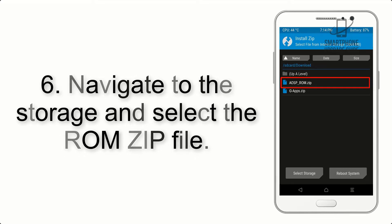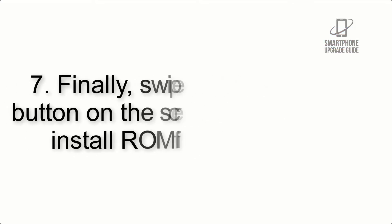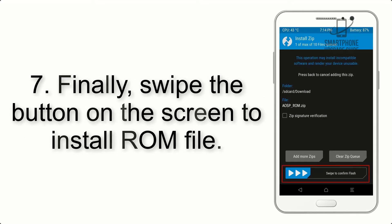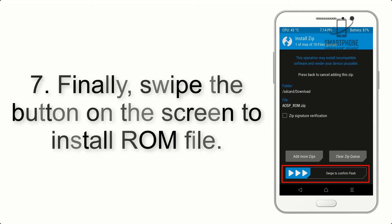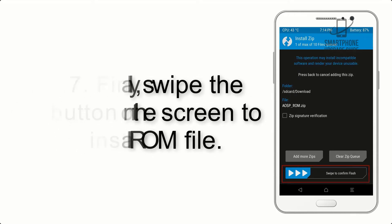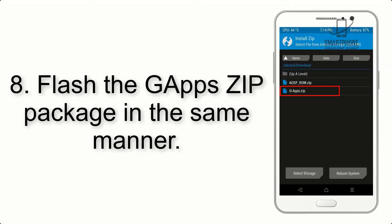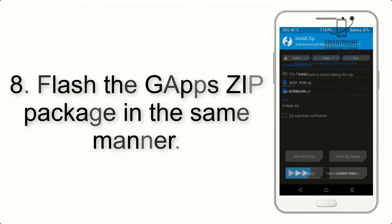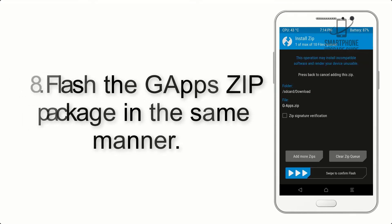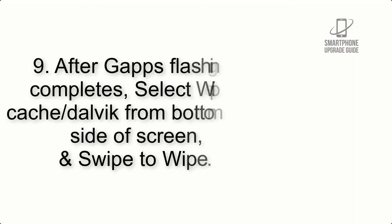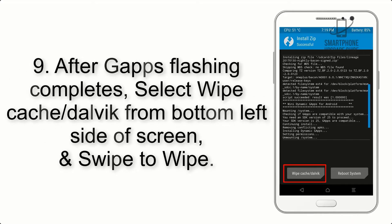Step 5: Go back to the recovery main screen and tap on the Install button. Step 6: Navigate to the storage and select the ROM zip file. Step 7: Finally, swipe the button on the screen to install the ROM file. Step 8: Flash the GApps zip package in the same manner.